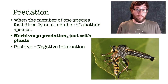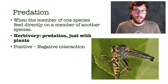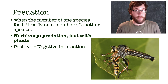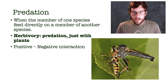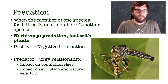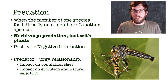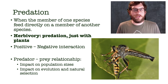Herbivory is similar, where you have an herbivore eating a plant, but the difference is that an herbivore doesn't have to kill the plant to consume it — predators do. You don't see cows walking around with chunks taken out of them. So herbivory does not have to end in death the way predation does.